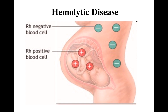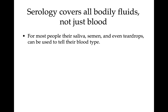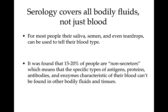The last topic: serology covers all body fluids, not just blood, and this comes into play with blood typing. For most people, you can find their blood type from their saliva, semen, or even tear drops, because the protein on the red blood cells also gets secreted in other body fluids. We call those people secretors. About 15 to 20 percent are non-secretors, meaning you can't determine their blood type from other body fluids, but the vast majority of people are secretors.